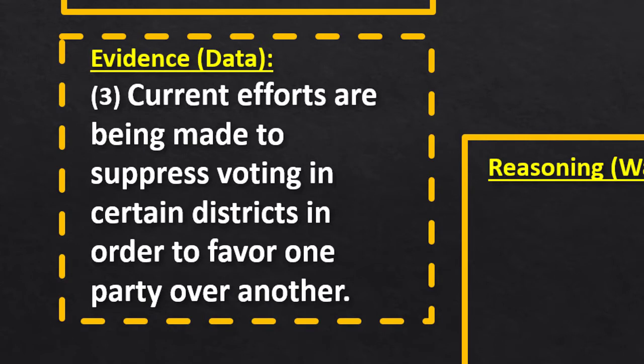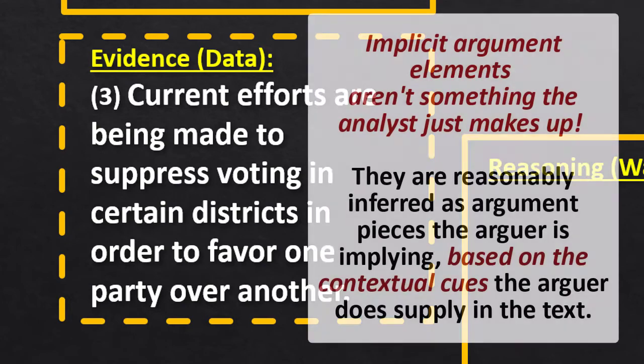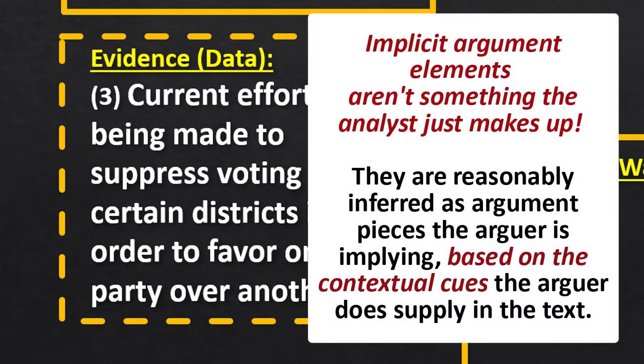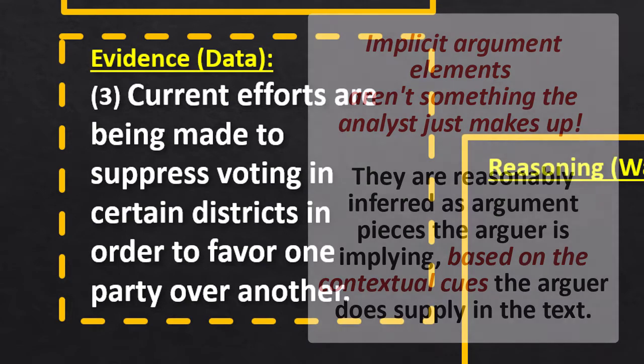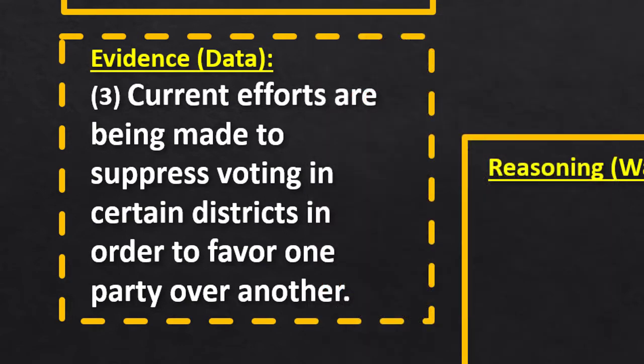When you bring that implicit evidence in — which is not something that we're just making up out of our own heads — this is something that we've been able to infer from the various contextual clues in the letter itself. We're not making up our own implicit evidence. We're pulling it from what we can deduce from what the author has given us.